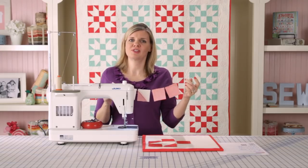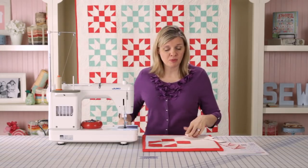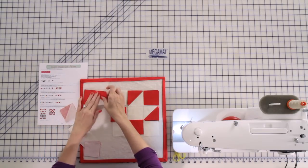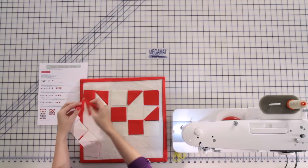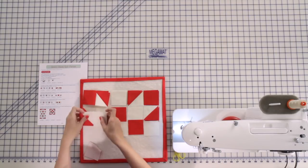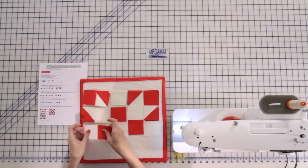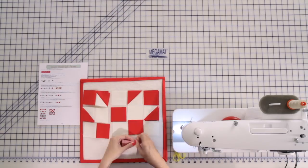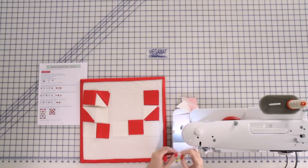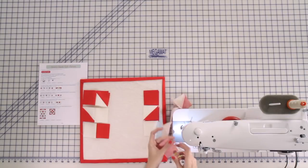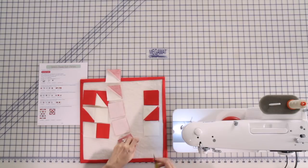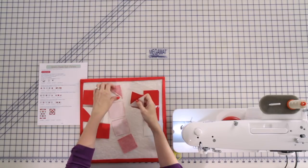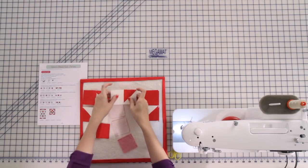So we've chain pieced our first two units together, and we're going to lay them out back on our design board exactly how they were before. Just clip, keep them in order so you can remember exactly what order. You're going to just lay out following your pattern. So this is complete and we're going to do the exact same step on these two units. So now we have our second section done and we're going to do the same thing. We're just going to clip them apart, lay them back out on our design board by following our pattern. Make sure we have everything in the right spot.